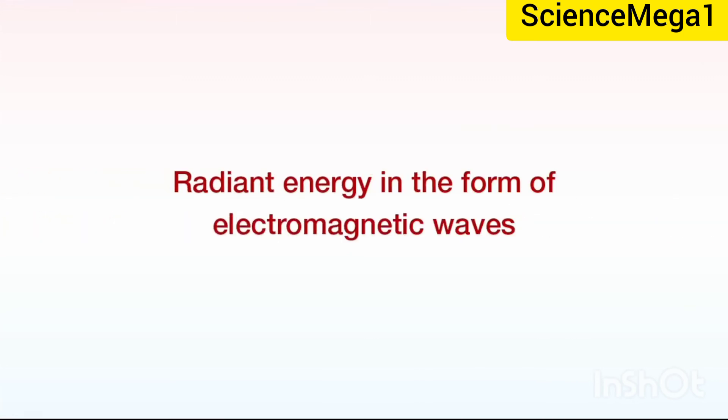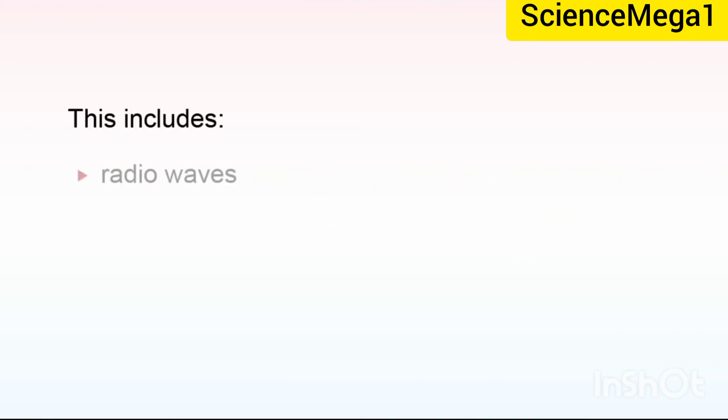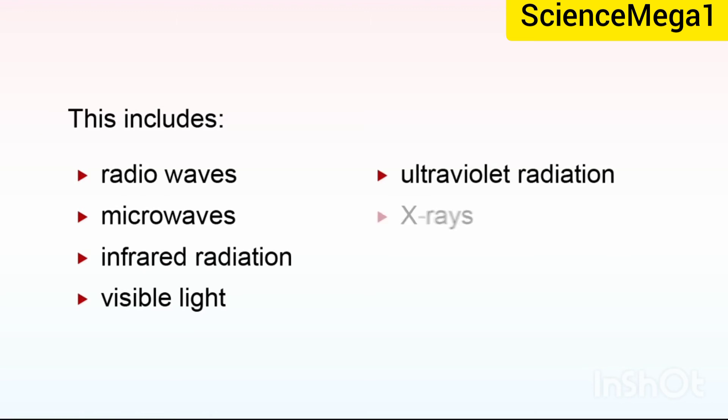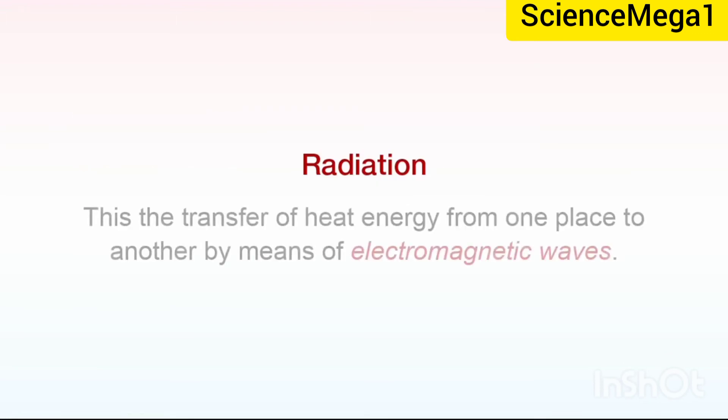We now look at radiant energy in the form of electromagnetic waves. This includes radio waves, microwaves, infrared radiation, visible light, ultraviolet radiation, x-radiation, and gamma rays. Radiation is the transfer of heat energy from one place to another by means of electromagnetic waves.